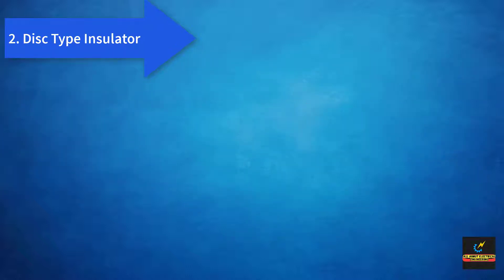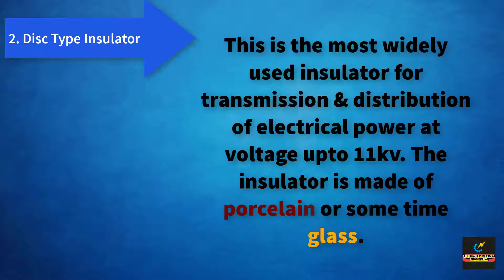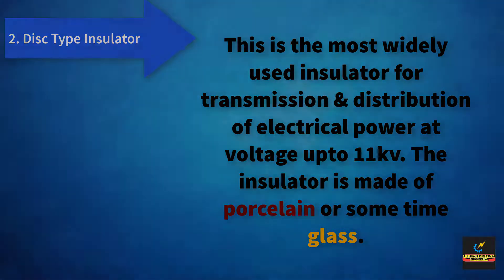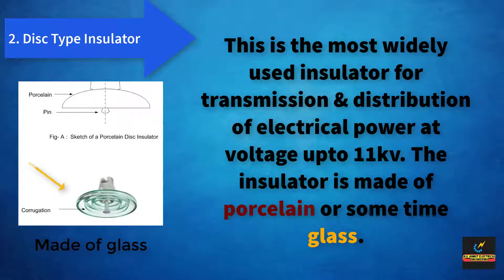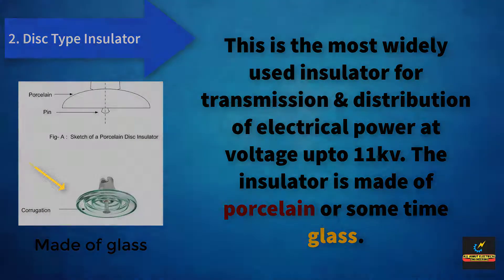The second type of insulator is the disc type insulator. This is the most widely used insulator for transmission and distribution of electrical power at voltages up to 11 kV. The insulator is made of porcelain, or sometimes glass.